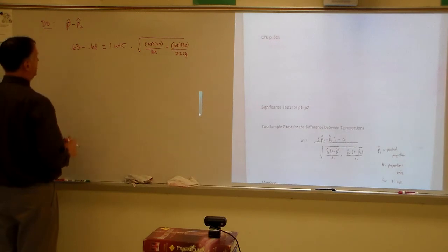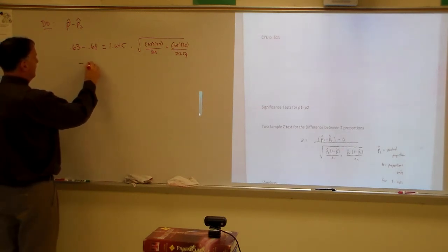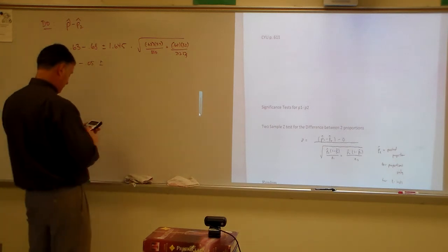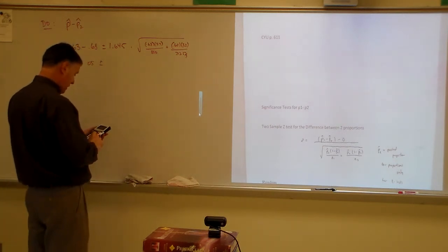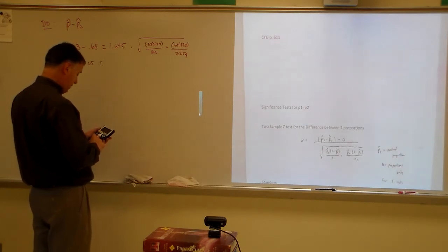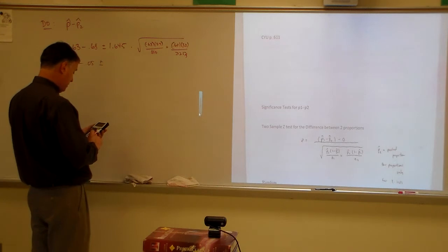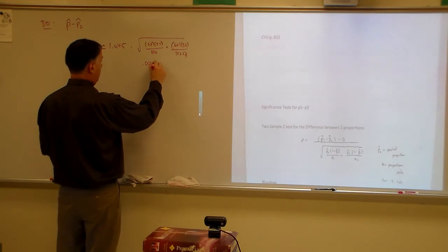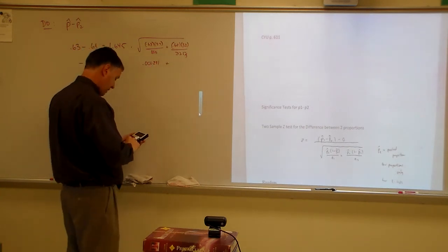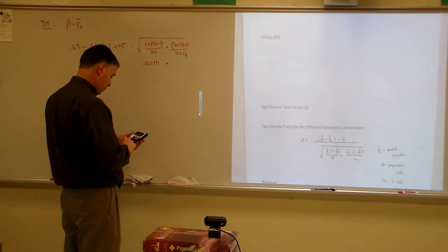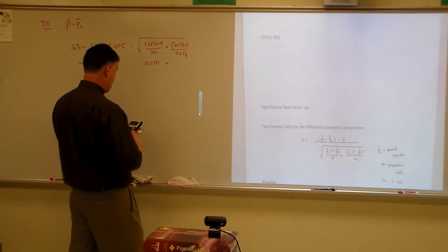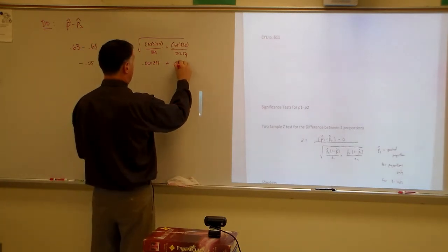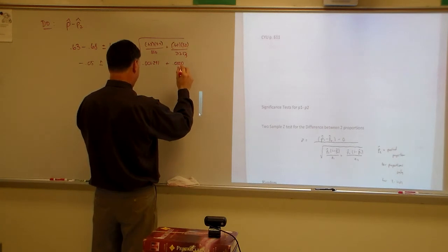So what's this going to be? 0.63 minus this is going to be negative 0.05 plus or minus. 0.63 times 0.37, 0.2331 divided by 800. I get 0.000291375, and then over here, 0.68 times 0.32, and then divide that by 2,253, 0.0000966.